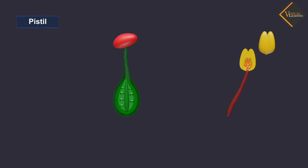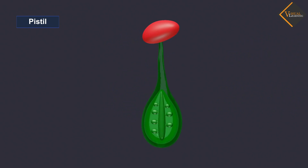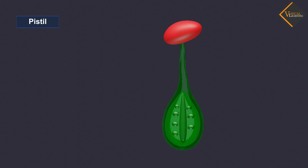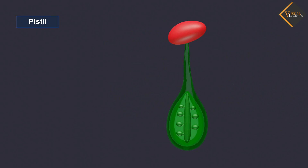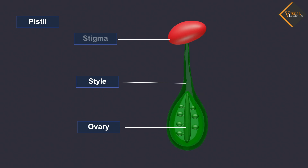Pistil is present in the center of a flower and is the female reproductive part. It is made of three parts. The swollen bottom part is the ovary. The middle elongated part is the style. And the terminal part, which may be sticky, is the stigma.